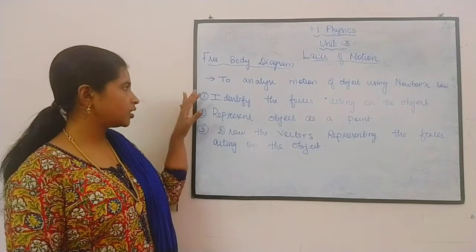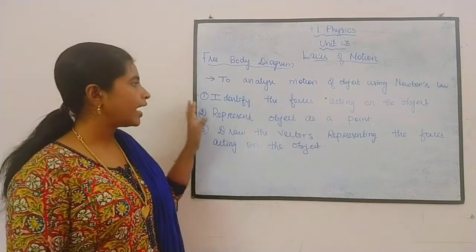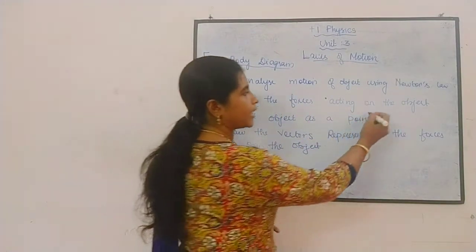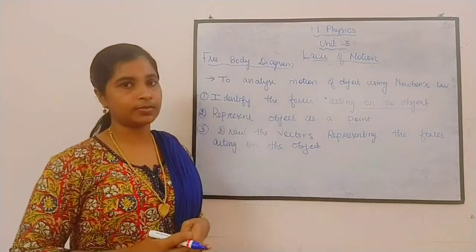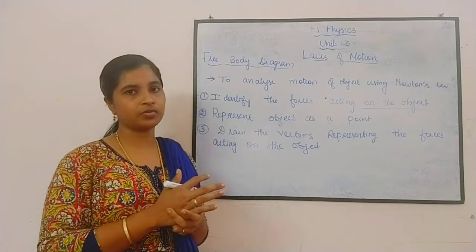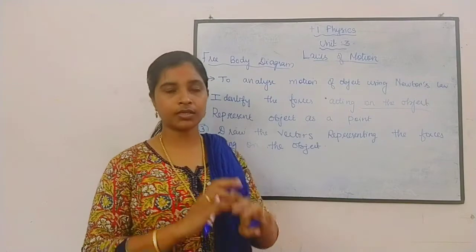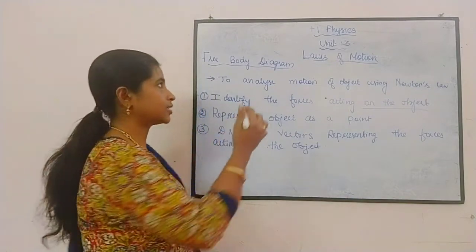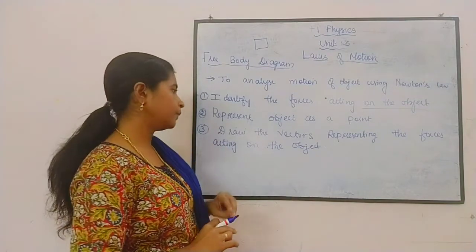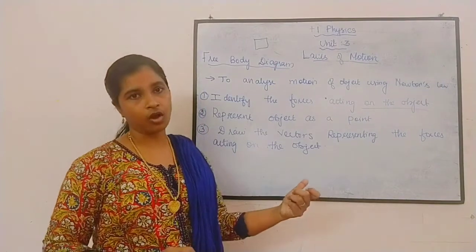So these are the three steps to be followed when drawing the free body diagram. First: identify the forces acting on the object — forces acting on the object, not by the object. Second: represent the object as a point. Whatever the object may be, represent it as a point.